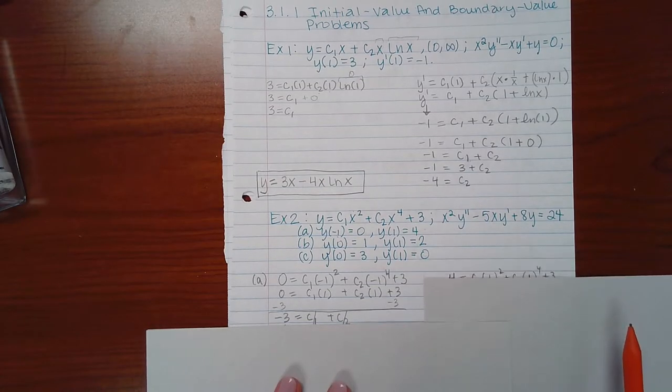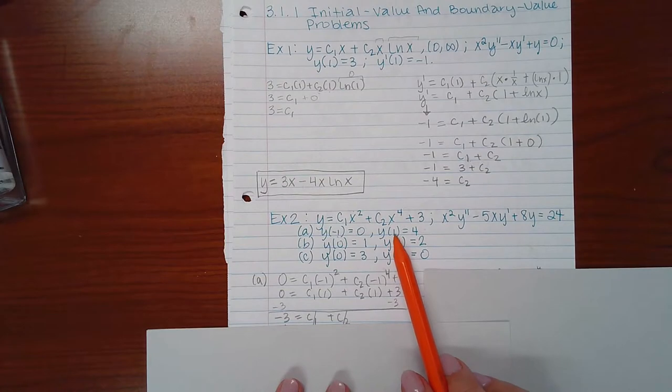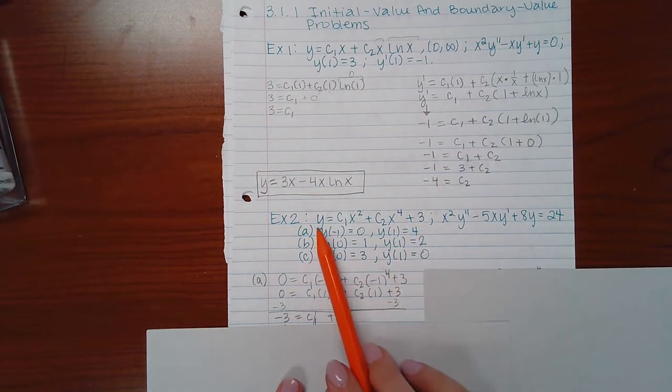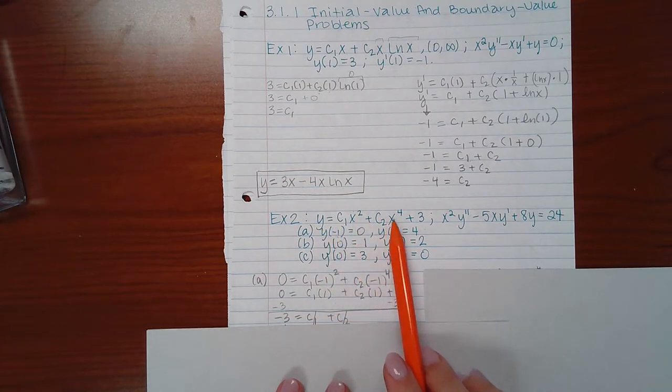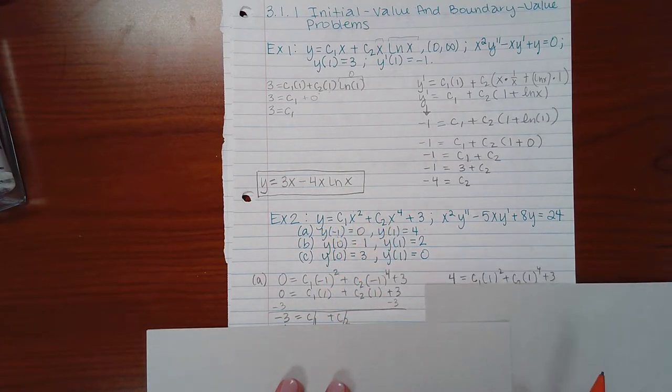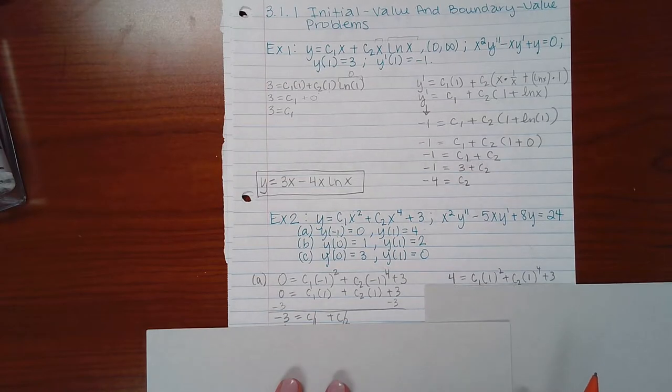Okay, now for the second condition, this means when x is positive 1, y is 4. So we plug in 4 for y, and we plug in 1 for the x's here and here. And we end up with this expression. And 1 squared and 1 raised to the 4th power are both positive 1.